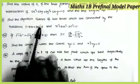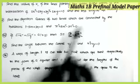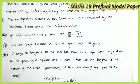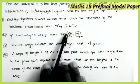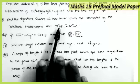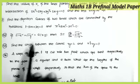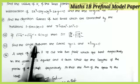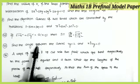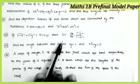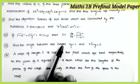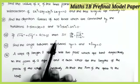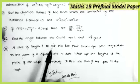Question 21: find the direction cosines of two lines connected by the relations l − 5m + 3n = 0 and 7l² + 5m² − 3n² = 0 — from the topic Direction Cosines and Direction Ratios. Question 22 is from Differentiation: if √(1 − x²) + √(1 − y²) = a(x − y), show that dy/dx = √(1 − y²) / √(1 − x²) — a very important question.